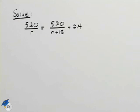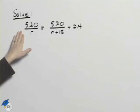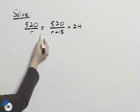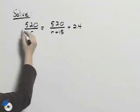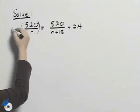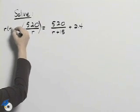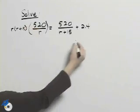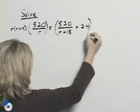The final step to solve this problem is to solve the equation that we wrote. We will do that by multiplying both sides of the equation by the common denominator, which is R times R plus 15. So I'll multiply this side times R times R plus 15, and I'll do the same for this side.